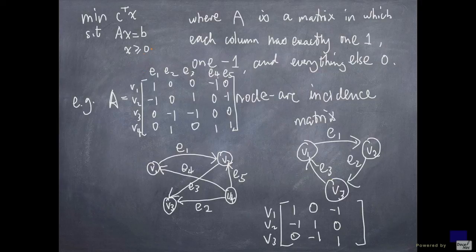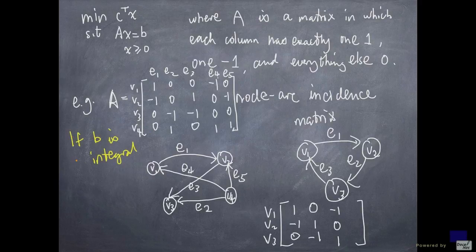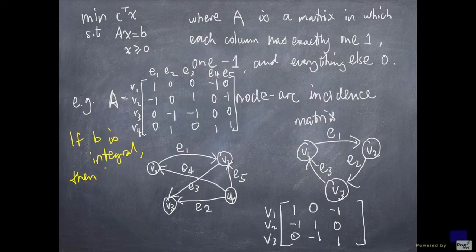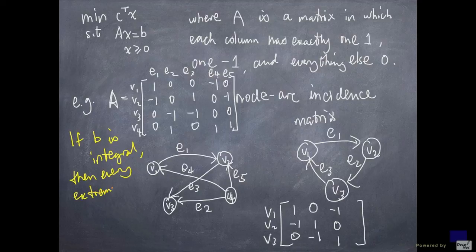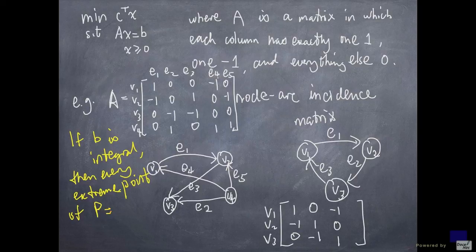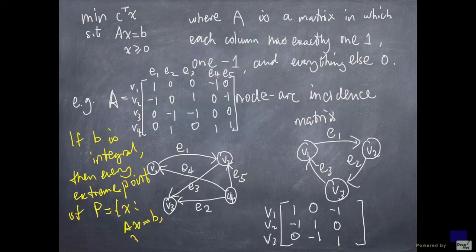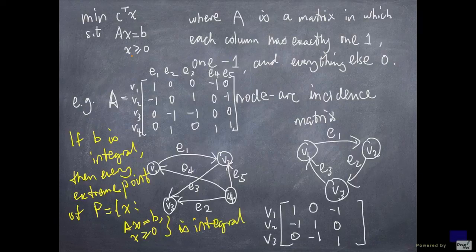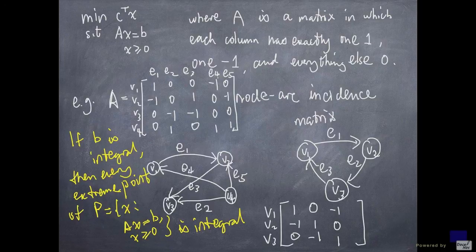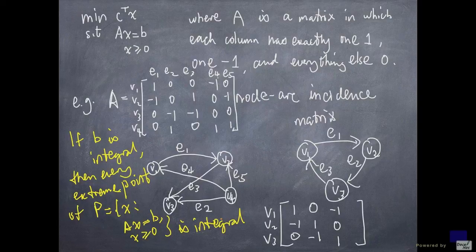Why are we interested in this form of linear programming problem? The reason is very simple. And one of the nice properties is that if b is integral, that means every entry in b is an integer, then every extreme point of the set P defined by x, such that ax equal to b, x greater than or equal to 0, is integral as well. So again, if every entry in b is an integer, then if you look at any extreme point of the feasible region, every entry is integer as well.